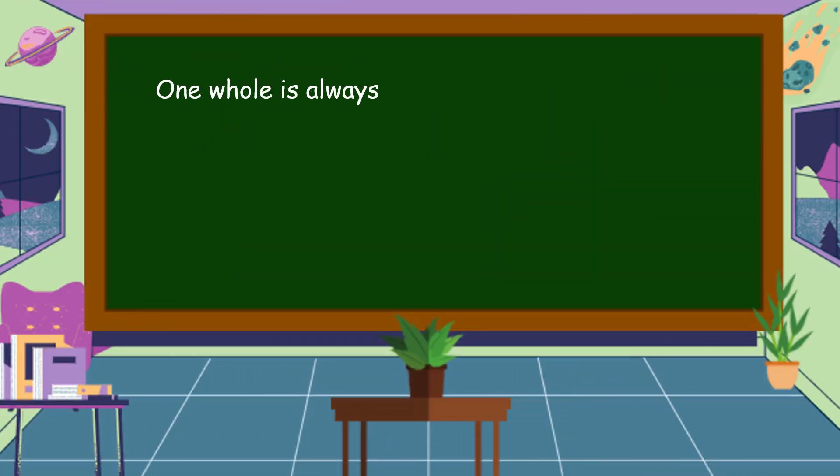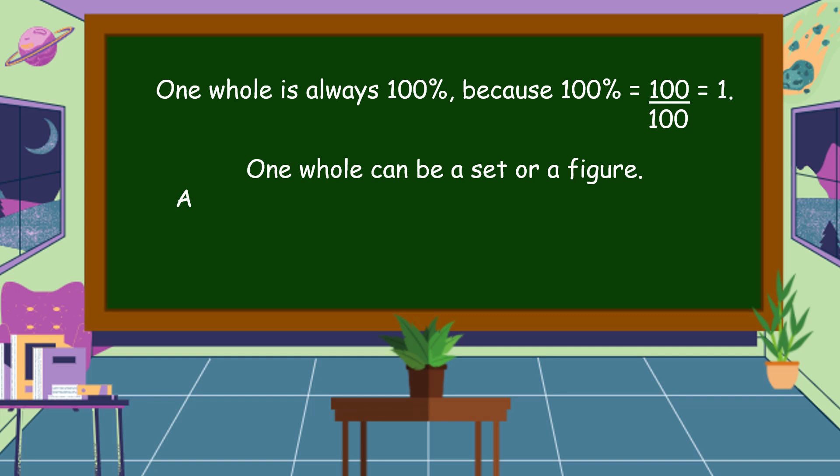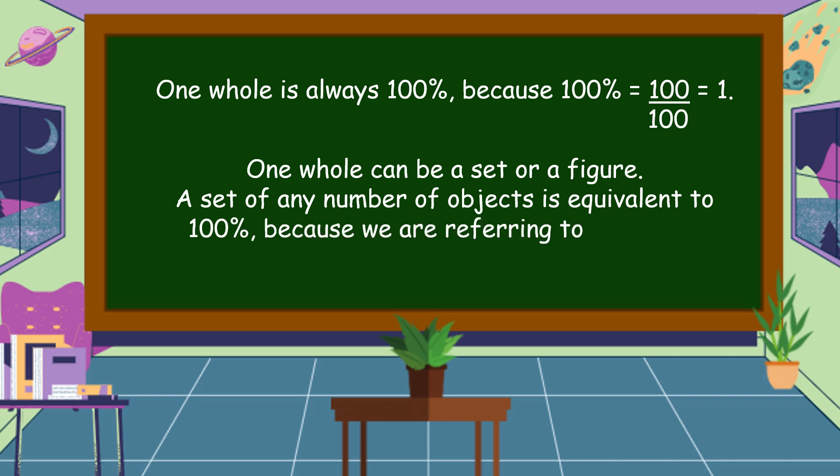One whole is always 100 percent because 100 percent is equal to 100 divided by 100 is equal to 1. One whole can be a set or a figure. A set of any number of objects is equivalent to 100 percent because we are referring to one whole group.